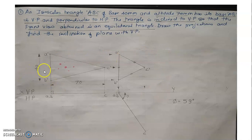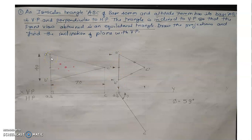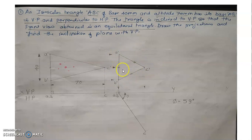Then draw the AB line A'B' parallel to the reference line and take 40 mm distance, because for an equilateral triangle all distances are the same. With A' as center, plot an arc to the parallel line from C' to get the C' point. Now we have plotted an equilateral triangle where all sides are the same.